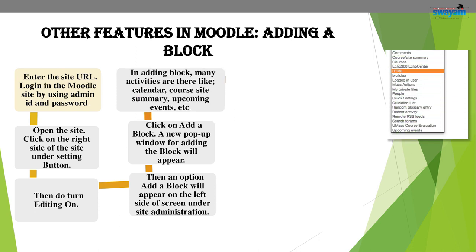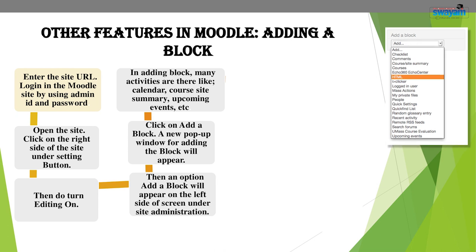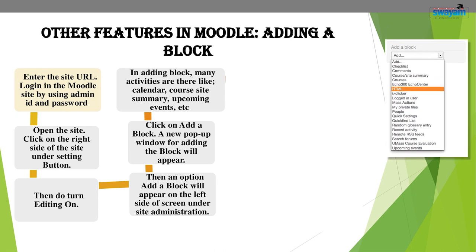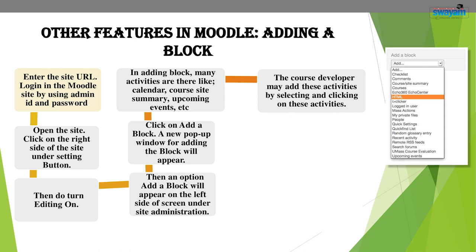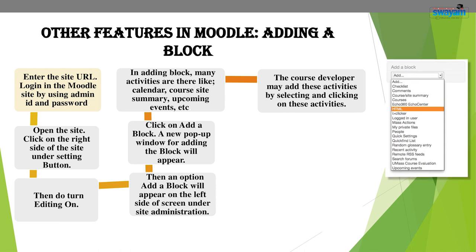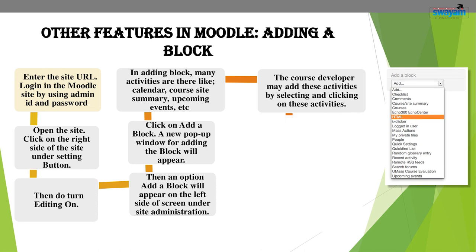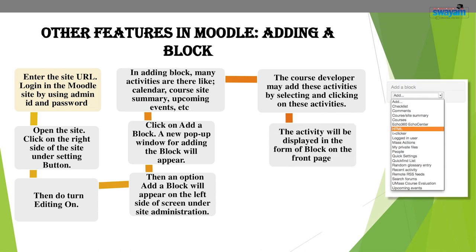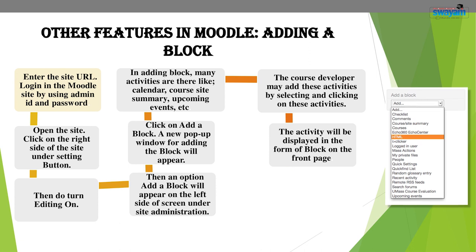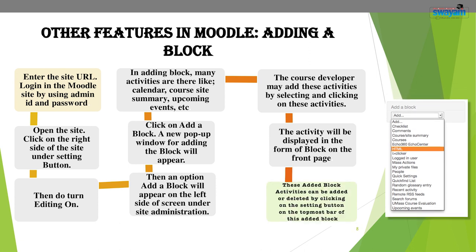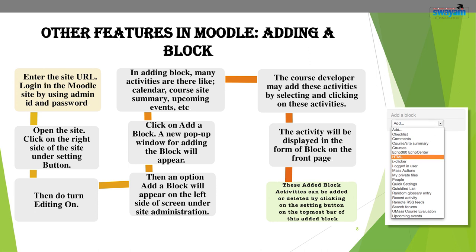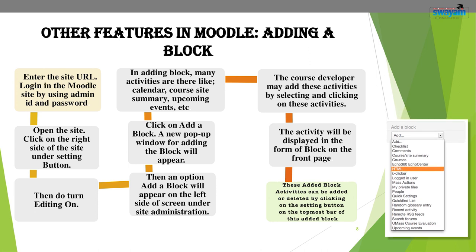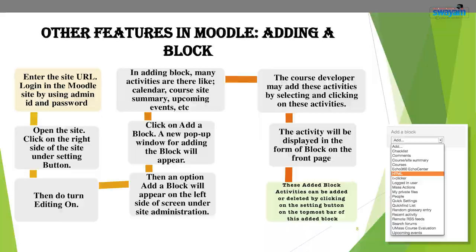In adding a block, many activities are available such as calendar, course/site summary, upcoming events, etc. The course developer may add these activities by selecting and clicking on them. The activity will be displayed as a block on the front page on the right side. These added block activities can be edited or deleted by clicking on the settings button on the top bar of the added block. Adding blocks to the course front page brings more clarity in online learning.